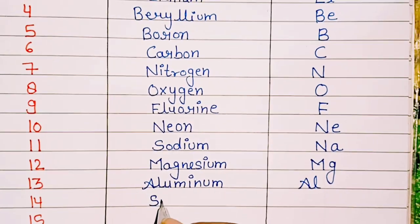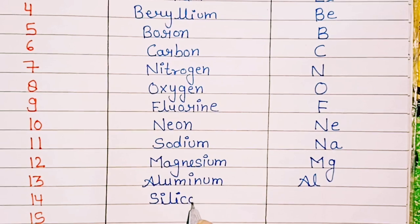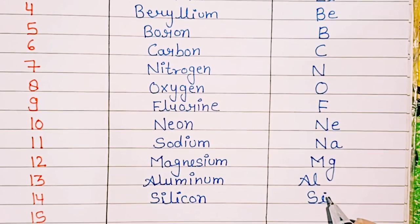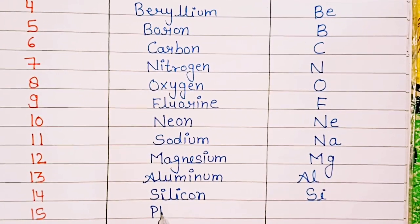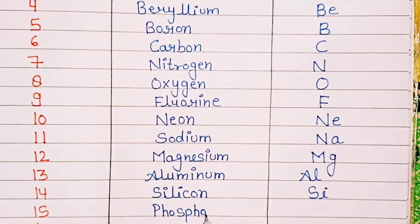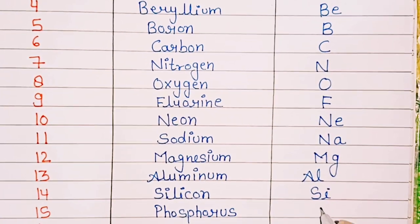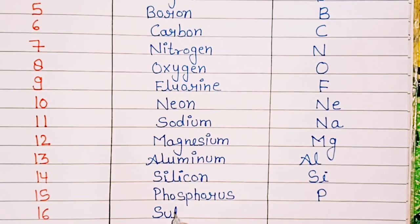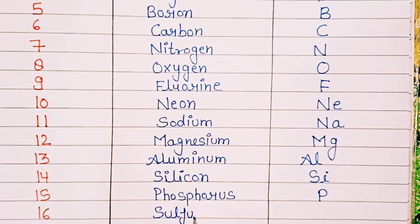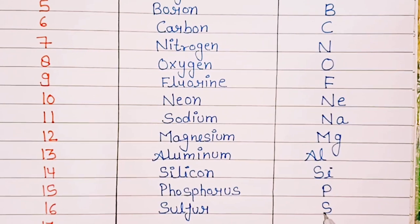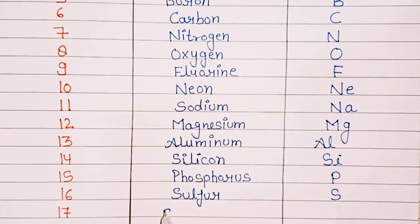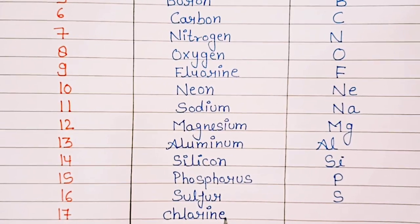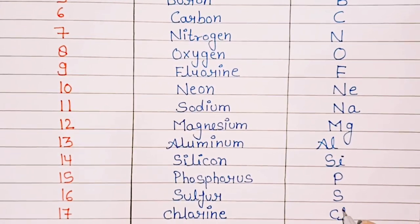14: Silicon, symbol Si. 15: Phosphorus, symbol P. 16: Sulfur, symbol S. 17: Chlorine, symbol Cl.